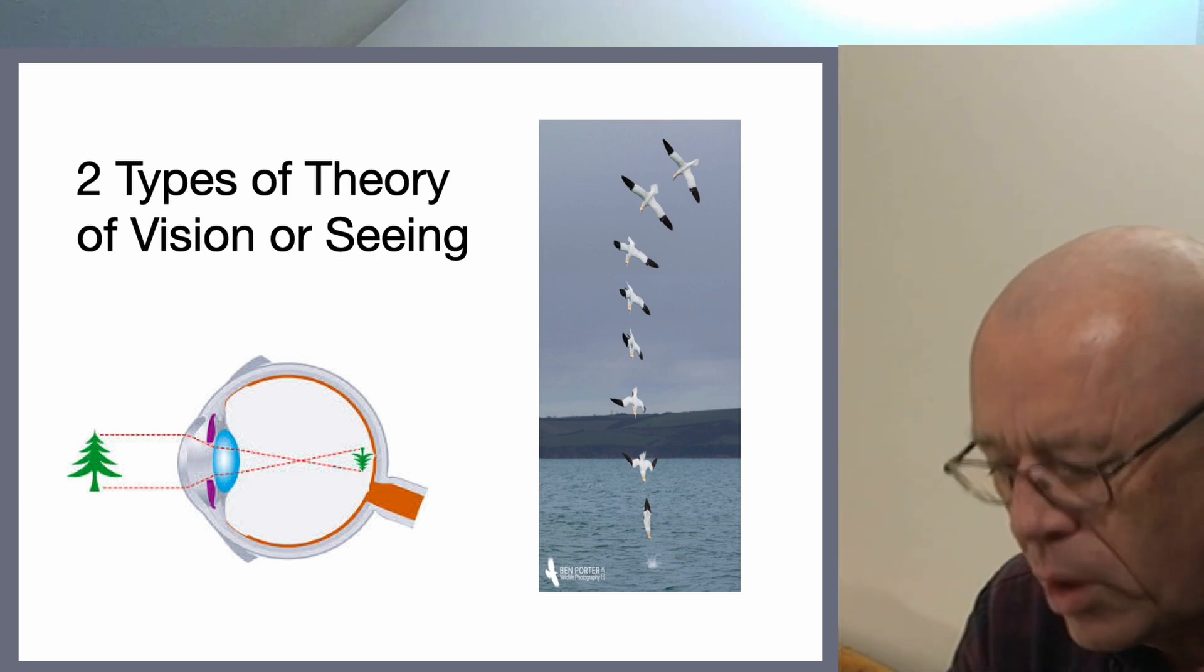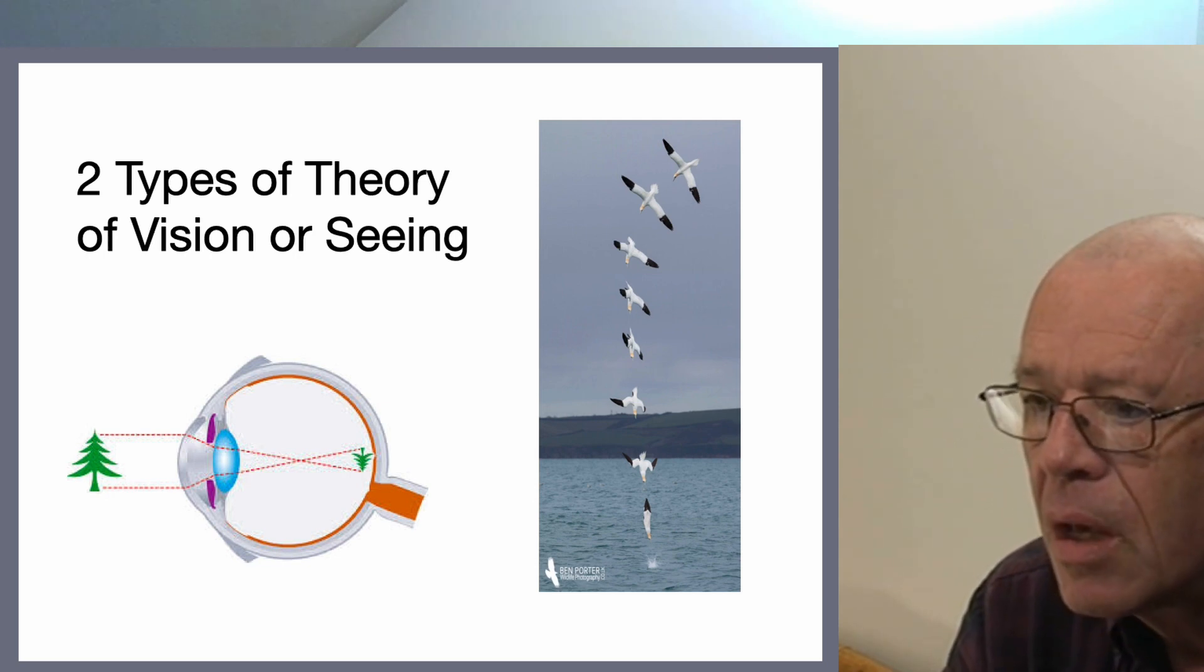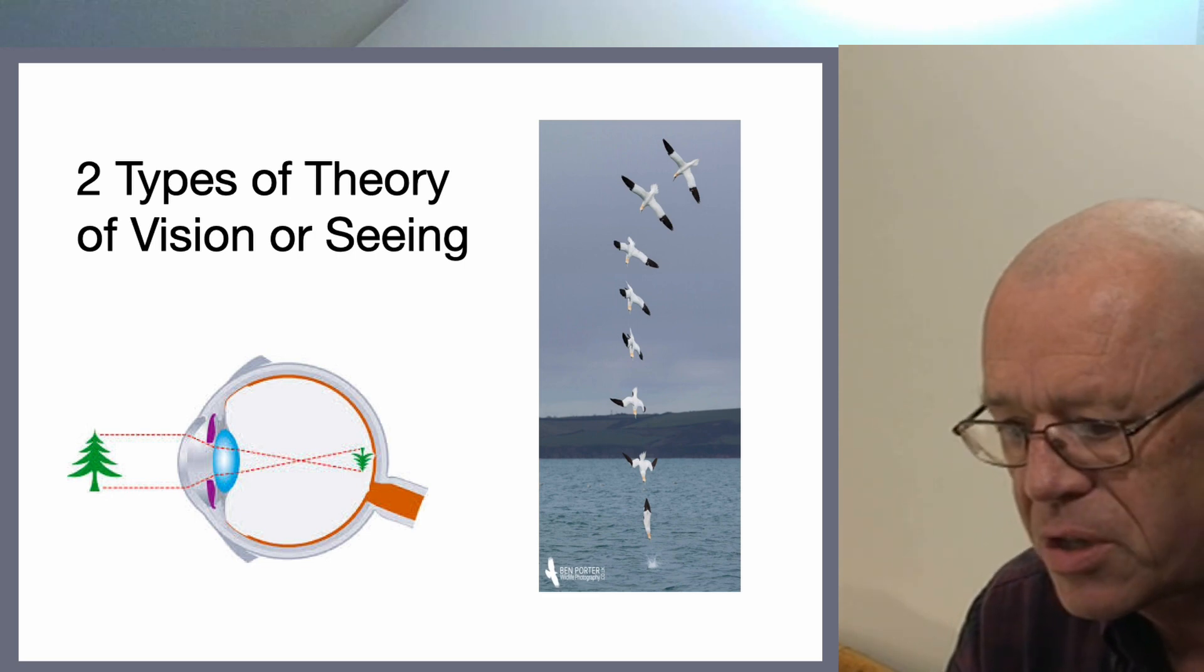We're going to in these videos consider two principal approaches to theories now of vision. One of these I will call imagistic and one I will call relational. So let's consider them in turn.